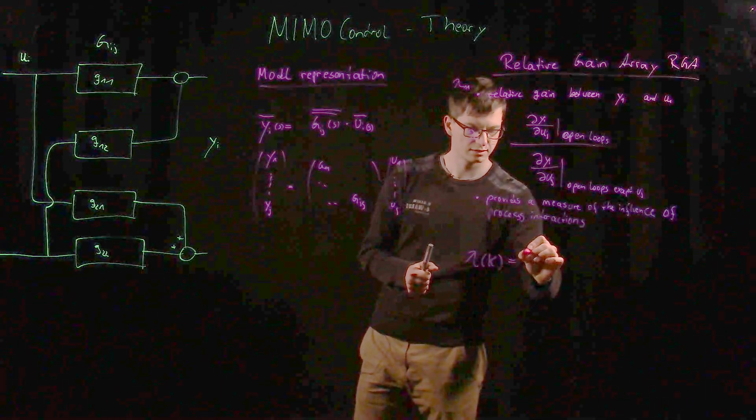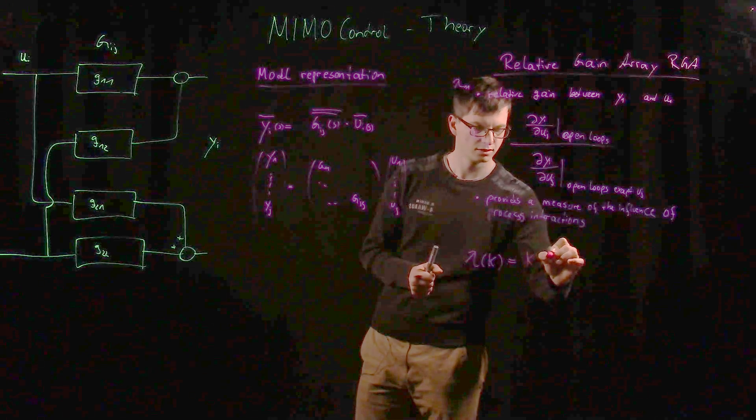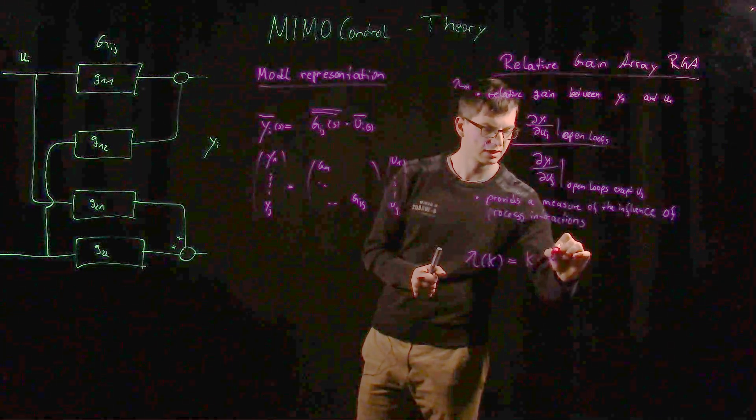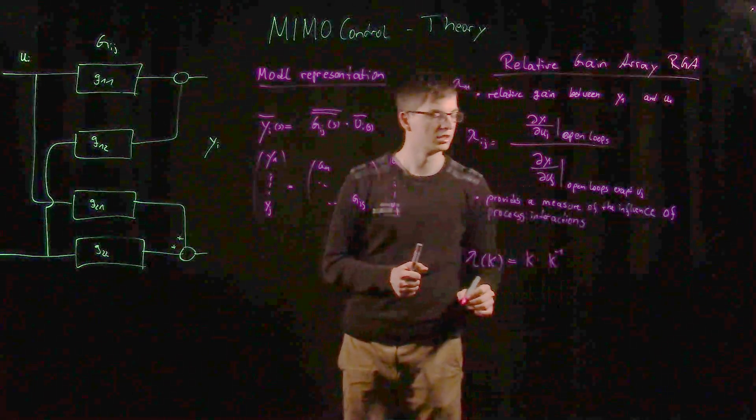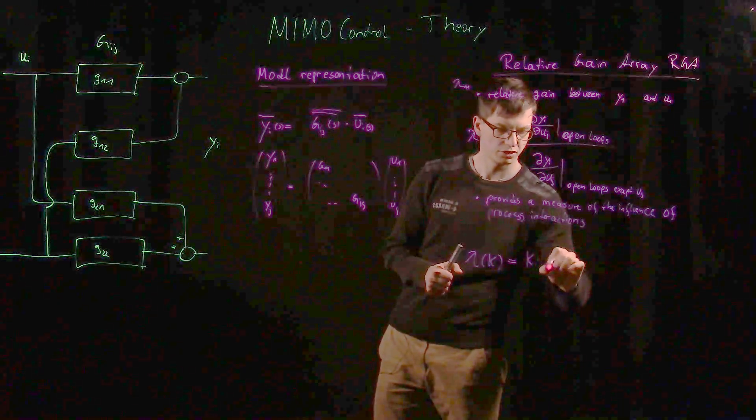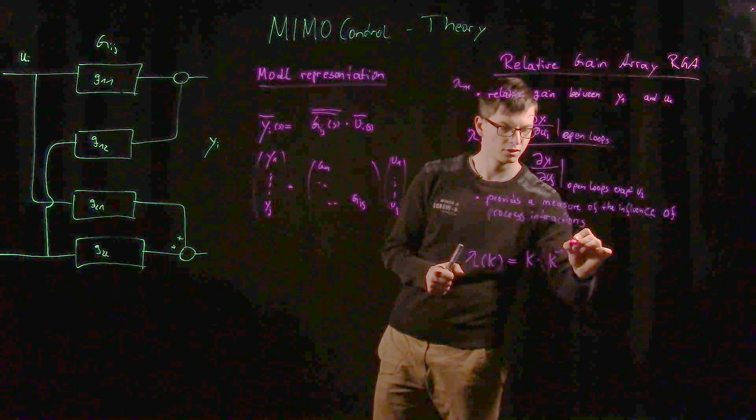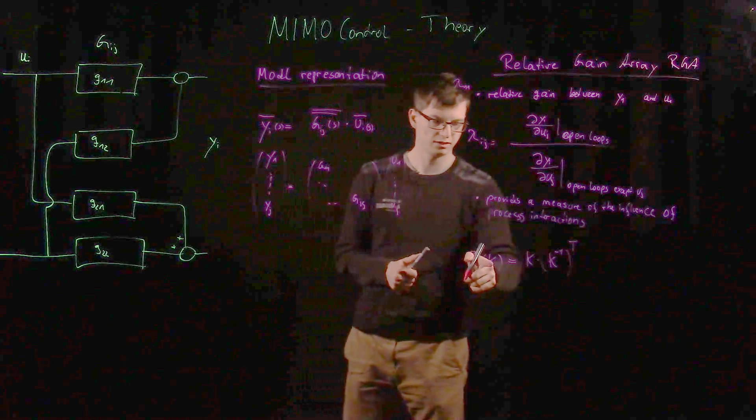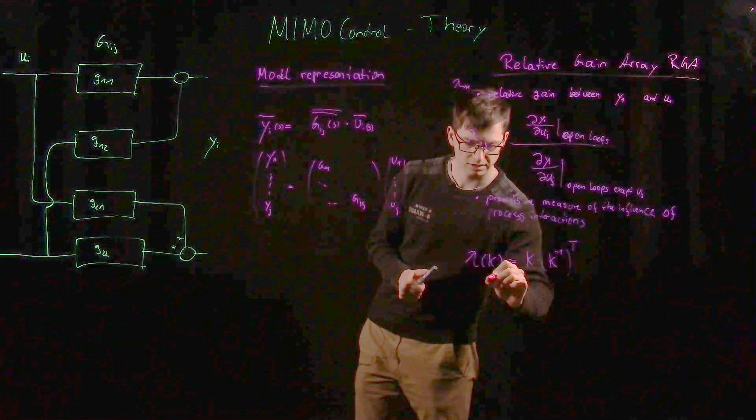We say it's k times k inverted, and the inverted part we want to transpose. That's actually it. And this dependence from k, what is k?